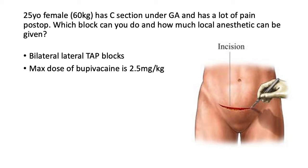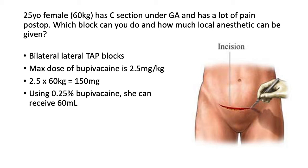Again, I would recommend using bupivacaine for longer-lasting pain control. The max dose of bupivacaine is 2.5 milligrams per kilogram, so her toxic dose would be 2.5 times her weight of 60 kilograms, which equals 150 milligrams. To determine the volume, you take the total toxic dose of 150 milligrams and divide it by the concentration of 0.25% bupivacaine — that's 150 divided by 2.5 — giving you a total of 60 milliliters of local anesthetic.